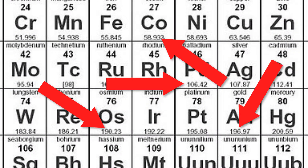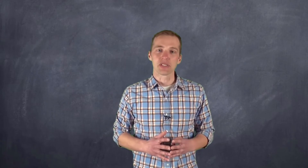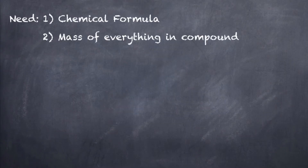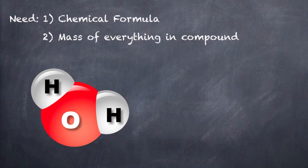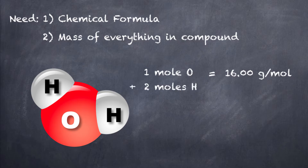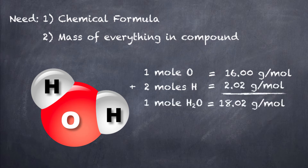We can look at any element on the periodic table and establish its molar mass just by looking at that number. And in fact, we can figure out the molar mass of a compound if we take the individual molar masses of all of the elements in that particular compound. For example, if we wanted to take the molar mass of water, we would have to understand that there are two hydrogens and one oxygen in that overall formula for the molecule, so we take oxygen's molar mass of 16.00 grams per mole, add it to the mass of two hydrogens, and we would get 18.02 grams per mole — that is, one mole of water would weigh 18.02 grams.